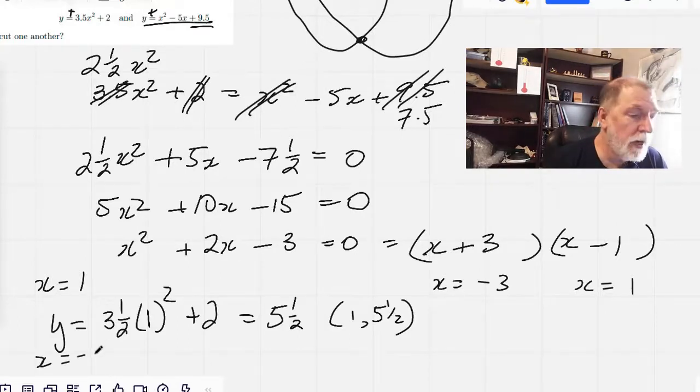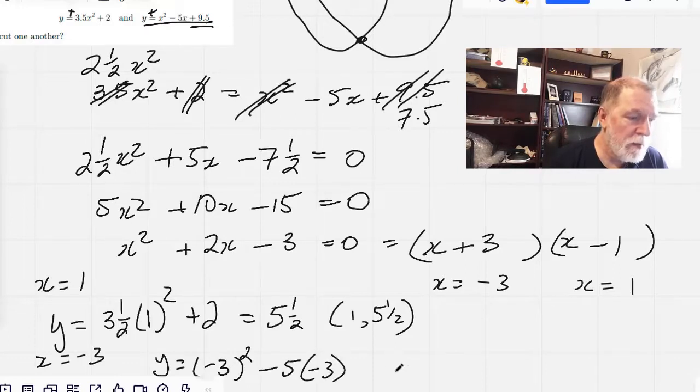We've got y equals, in fact, this second equation is just going to be so much easier to use. So let's do negative 3 squared minus 5 times negative 3 plus 9 and a half. And that equals 9 plus 15 plus 9 and a half.